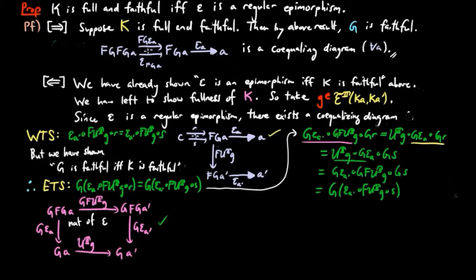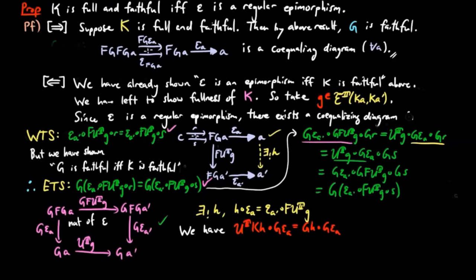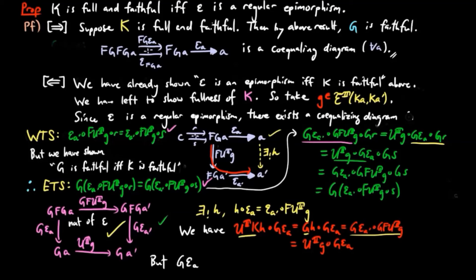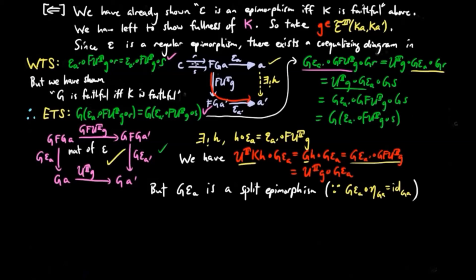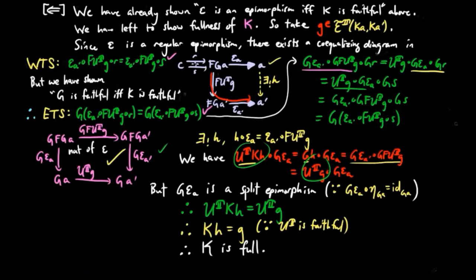Therefore, since epsilon_{A'} ∘ F(UTG) co-equalizes R and S, there exists a unique morphism H such that H ∘ epsilon_A equals epsilon_{A'} ∘ F(UTG). So we have UTK(H) ∘ G(epsilon_A) equals G(H) ∘ G(epsilon_A), since UTK equals G. This equals G(epsilon_{A'}) ∘ GF(UTG) by the equality of H ∘ epsilon_A and epsilon_{A'} ∘ F(UTG). Then by the purple diagram on the left, this is UTG ∘ G(epsilon_A). But G(epsilon_A) is a split epimorphism, since G(epsilon_A) ∘ eta_{GA} is the identity on GA by the triangle identity. Therefore we cancel it from the right to get UTK(H) equals UTG. So KH equals G since UT is faithful. Therefore K is full, and that completes the proof.